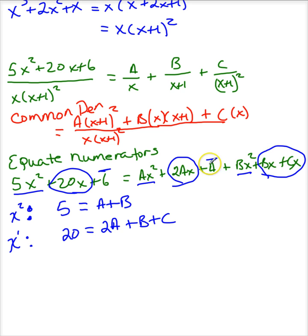And then for my constant terms, is that the only constant term I have? Cool. For x to the 0 terms, I have 6 has to equal a. Well, that's convenient.